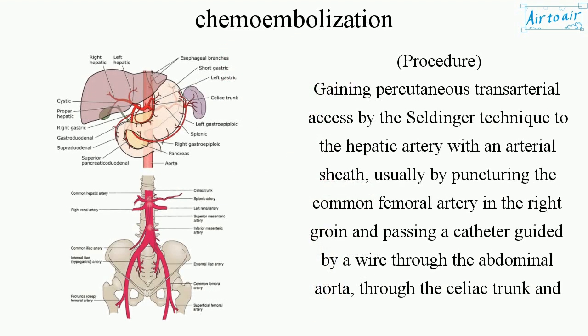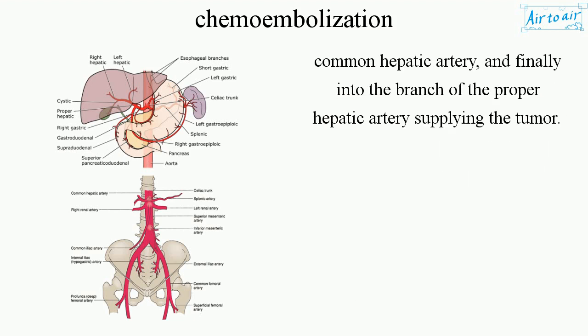The procedure involves gaining percutaneous transarterial access by the Seldinger technique to the hepatic artery with an arterial sheath, usually by puncturing the common femoral artery in the right groin, and passing a catheter guided by a wire through the abdominal aorta, through the celiac trunk, into the common hepatic artery, and finally into the branch of the proper hepatic artery supplying the tumor.